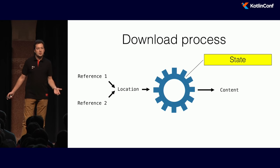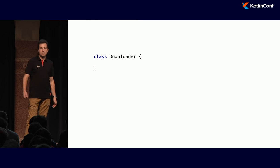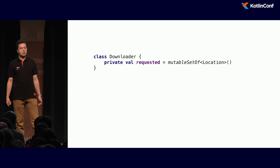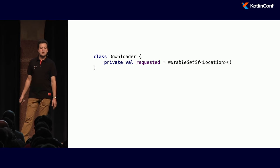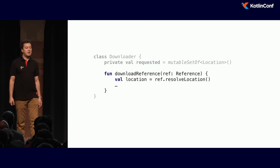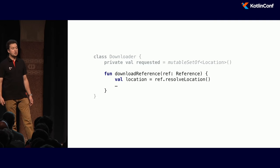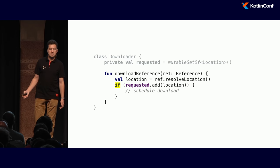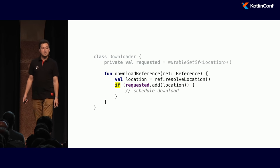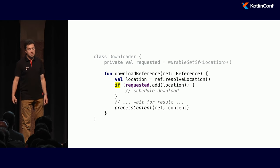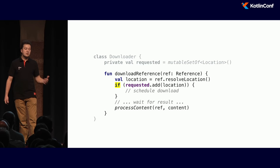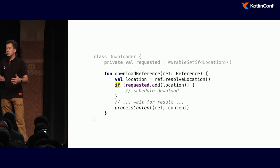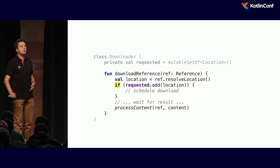There's a process with state. In object-oriented programming with threads, we're told to write a class. We usually encapsulate threads in a class, so let's create a `Downloader` class. It has a private state — a set of locations being downloaded. When the class is asked to download a reference, it resolves the location of that reference. If it's the first time somebody's requesting this location and it's not yet in the set, we schedule a download; otherwise, if it was already downloaded, we wait for results and process content. This is a skeleton of what we'd have written if we were programming with threads.